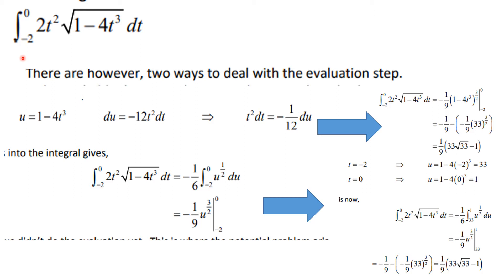By way of introduction, let's talk about a problem. We can integrate from minus 2 to 0, 2t squared square root of 1 minus 4t cubed dt. Doing this by substitution we would let u equal 1 minus 4t cubed. Du is then minus 12t squared dt, and that means that t squared dt is minus 1 over 12 du. The substitution gives us this, but now we're at the evaluation step. This is after we've taken the antiderivative and we have to now plug in the numbers.